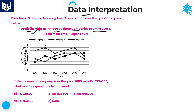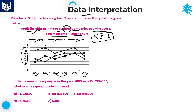We are talking about three companies: company A, company B, and company C, over the years 2001, 2002, 2003, 2004, 2005, and 2006. Total 6 years and 6 years' profit values for three different companies A, B, C. Also, one formula is provided: profit is equal to income minus expenditure. That is the given information in this line graph.